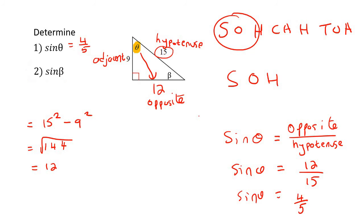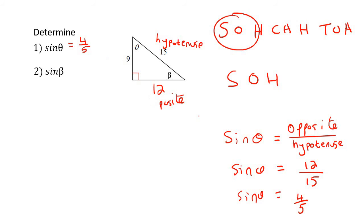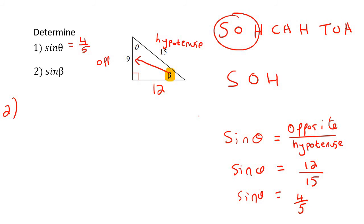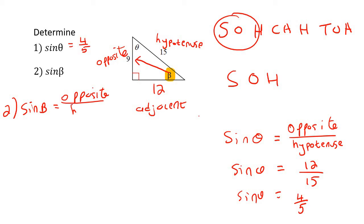Now we need to do number 2. The question starts over. The hypotenuse is still correct because it's always the one opposite the 90. Now we're looking at the beta angle. The opposite is now the one opposite that angle. So opposite and adjacent have switched places. Sin beta is equal to opposite over hypotenuse, which is 9 over 15. Simplify that and you get 3 over 5.